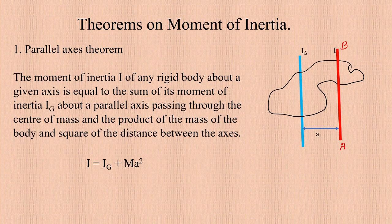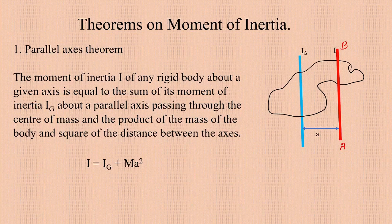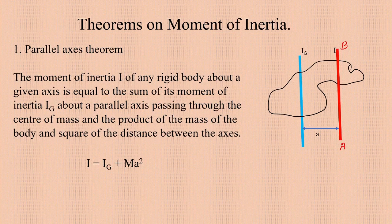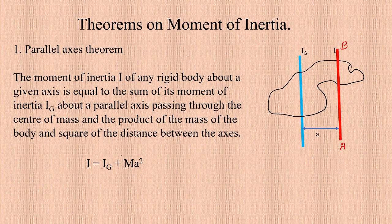Statement of the parallel axis theorem: The moment of inertia I of any rigid body about a given axis is equal to the sum of its moment of inertia Ig about a parallel axis passing through the center of mass, and the product of the mass of the body and the square of the distance between the axes.